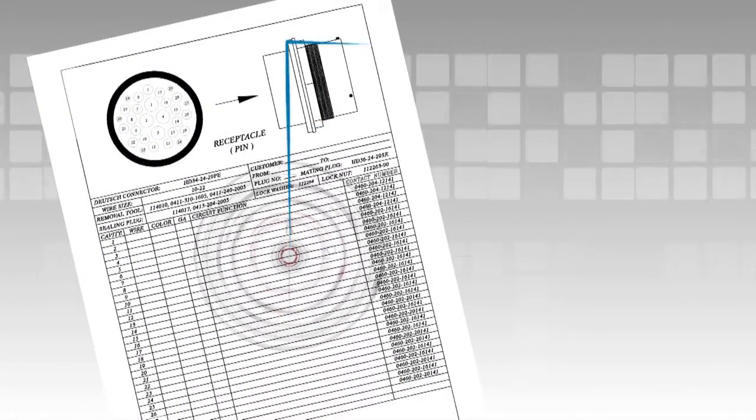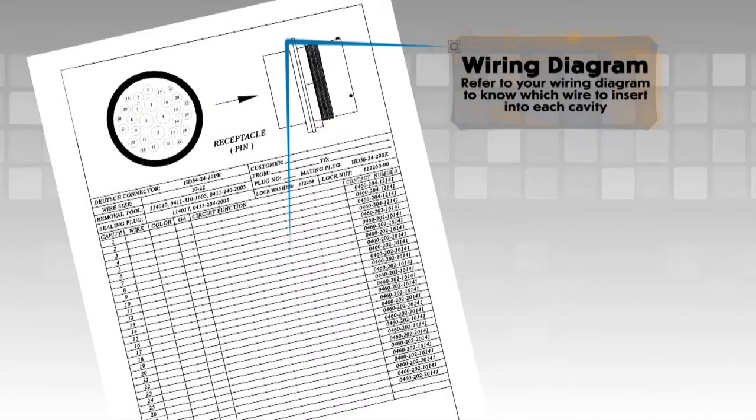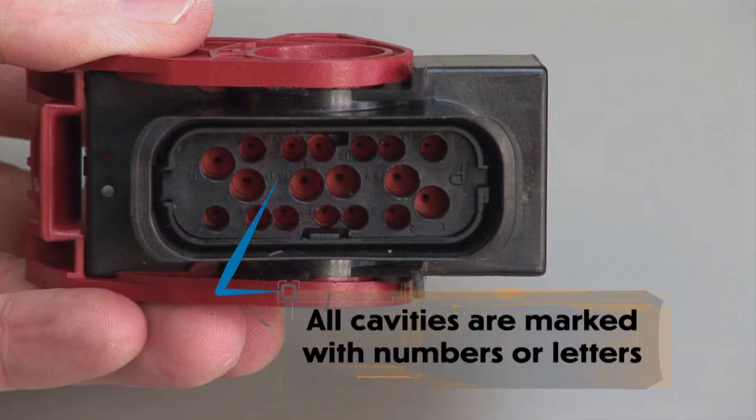Refer to your wiring diagram to know which wire to insert into each cavity. All cavities are marked with numbers or letters depending on the design.